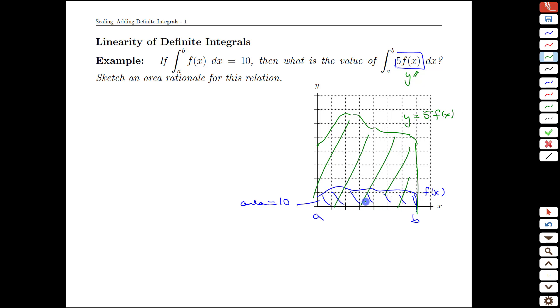We get the fairly intuitive result that we are going to have 5 times as much height, and if we have 5 times as much height over the same area, we're going to have an area of 50.